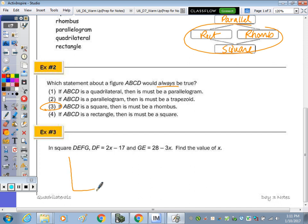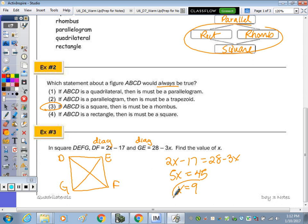Last one. In squares, let's actually draw the square. D, E, F, G. DF is a diagonal. EG is a diagonal. Find the value of X. They are congruent. The diagonals are congruent so we said 2X minus 17 equal to 28 minus 3X. To solve for X, I'm going to add the 3X over and we get 5X. Add 17 over and we get 45. Divide by 5 and X is 9.